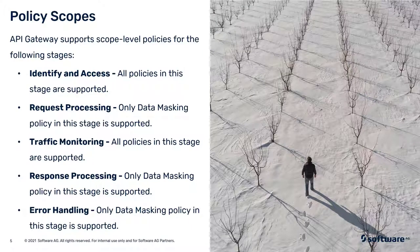API Gateway supports scope-level policies for the following stages. For Identify and Access, all the policies in this stage can be added as scope-level policies. For Request Processing, Response Processing, and Error Handling, only the Data Masking policy can be added as a scope-level policy. In the case of Traffic Monitoring, all the policies can be added as a scope-level policy.